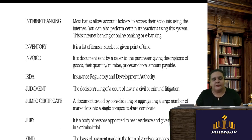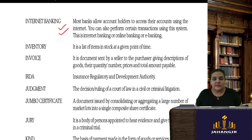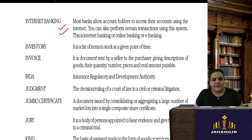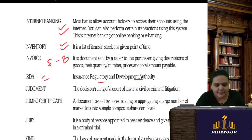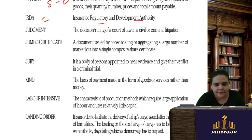Internet banking — everything is now online; we all know what internet banking is, used to access our accounts over the internet. Inventory is the amount of stock at a given point of time. Invoice is a document sent by the seller to the buyer. IRDA stands for Insurance Regulatory and Development Authority.